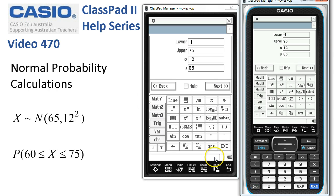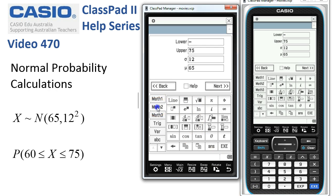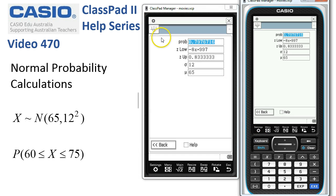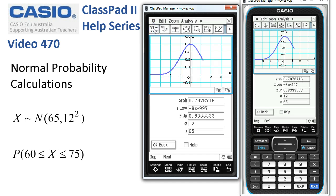To find infinity, it's on the Math 2 tab. Here it is on this Math 2 keyboard: negative infinity. The upper is still 75. The standard deviation and mean are all the same. We tap next and let's get rid of the keyboard and have a look at the graph of what we've just calculated.